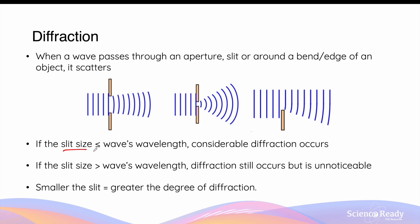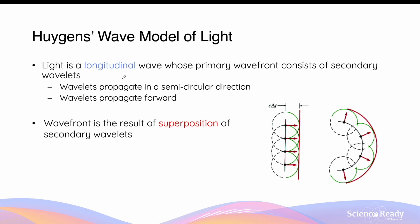If the slit size is smaller than the wave's wavelength, then considerable amounts of diffraction will occur. If the slit size is larger than the wavelength, diffraction will still occur, but to a less noticeable extent. It is important to note that the smaller the size of the slit or aperture, the greater the degree of diffraction.